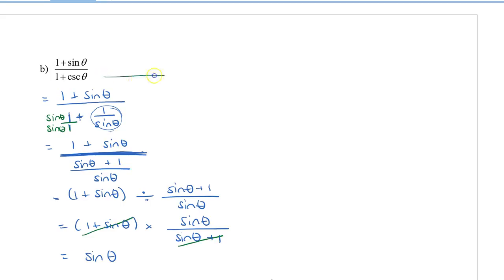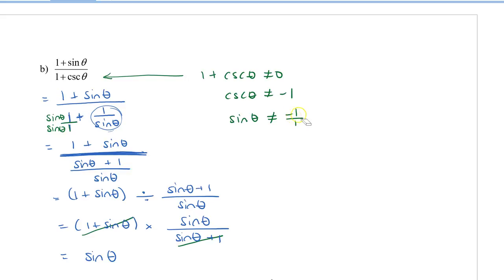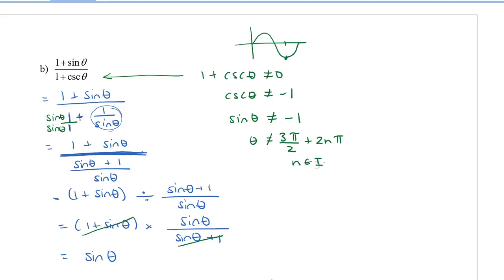Now let's find the non-permissible values. The denominator is 1 plus cosecant theta, and that can't equal 0, so cosecant theta can't equal negative 1. Since cosecant is the reciprocal of sine, sine theta equals negative 1. Looking at the sine graph, that occurs at 3π/2. So theta cannot equal 3π/2 plus 2nπ, where n is an integer. We also have sine theta can't equal 0, so theta cannot equal nπ, where n is an integer.